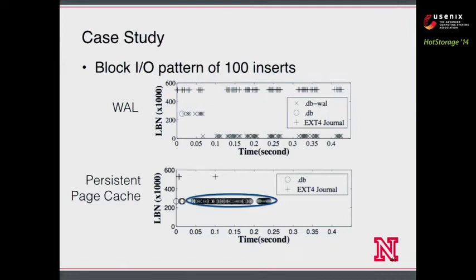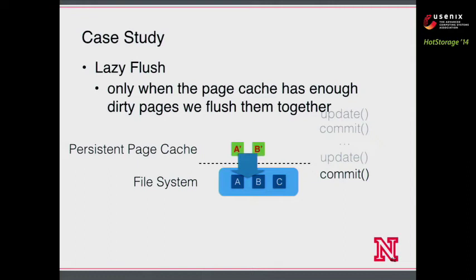So far we haven't unleashed the full potential of QNVRAM. In persistent page cache, we still have to write data to flash storage on every commit. We can be more lazy: we flush dirty pages in the persistent page cache only when there are enough dirty pages. When we update block A and commit, we don't issue a flush immediately. When we update block B and commit, at that point we have enough dirty pages and we flush them together to flash storage.